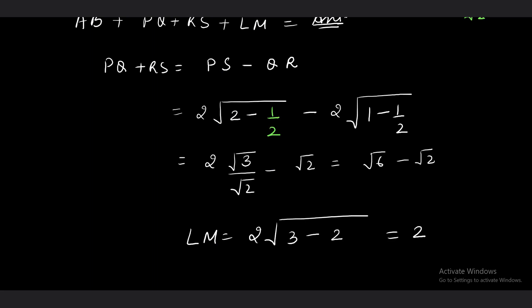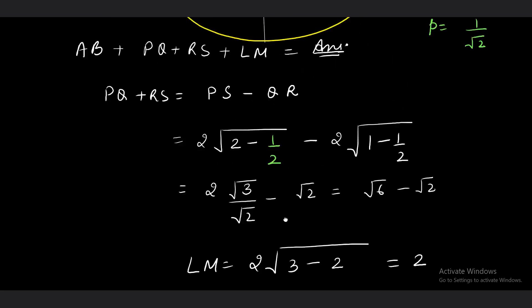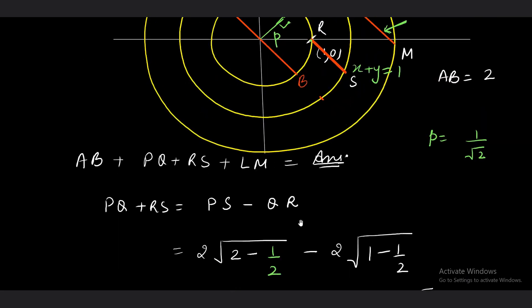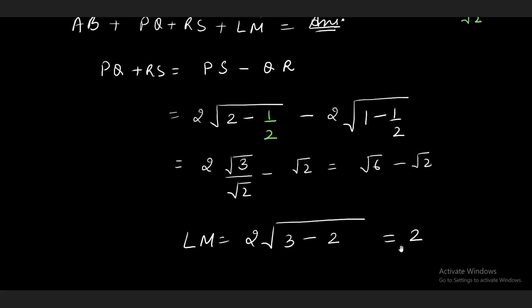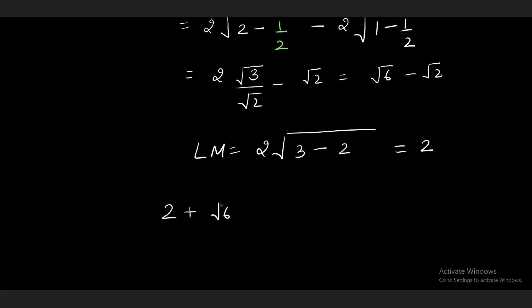Now collecting all the lengths: AB = 2, PQ + RS = √6 − √2, and LM = 2. The total sum is 2 + (√6 − √2) + 2 = 4 + √6 − √2. That is the answer to the question.